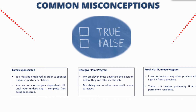Another caregiver misconception: my sibling cannot offer me a position as a caregiver. This is false — in many cases, close family members have come to Canada based on a family member providing the job offer. On the current application, they do ask if you are related to the employer, and you would be honest and put that information in. But it doesn't take away from the genuineness of the job. As long as there is a genuine need and this person qualifies for the position, they are as qualified as anybody else. Just make sure that the sibling or relative actually meets the requirements of the job.